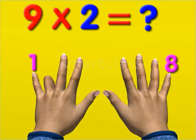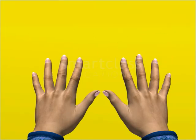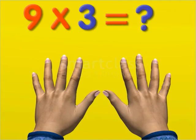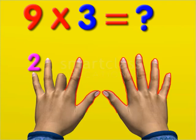thus 9 times 2 is equal to 18. Similarly, to find 9 times 3, bend the third finger of your left hand. The number of fingers to the left of the bent finger is 2, and the number of fingers to the right is 7.